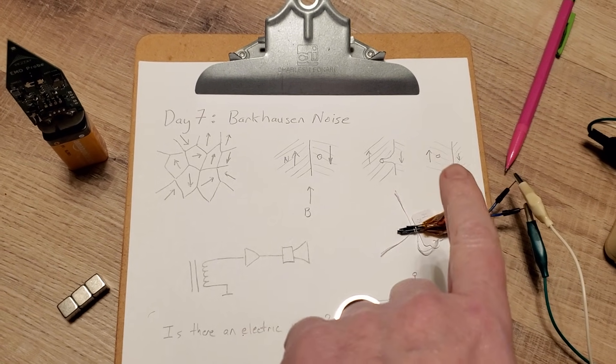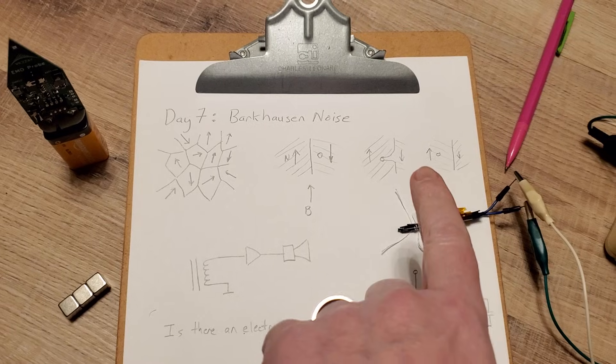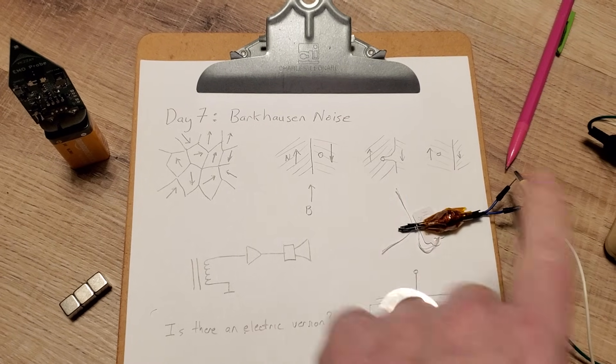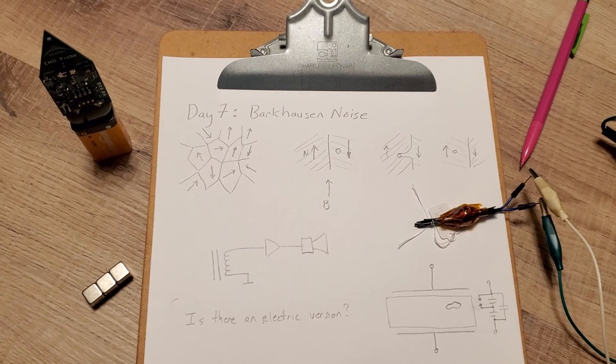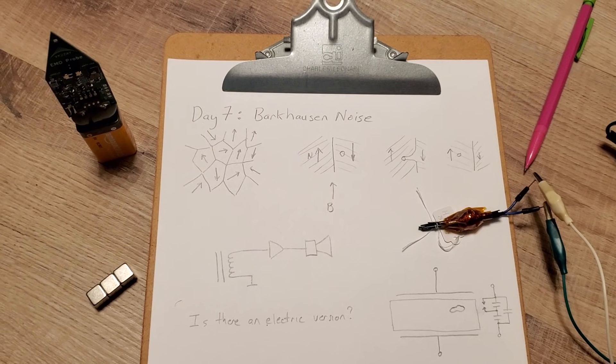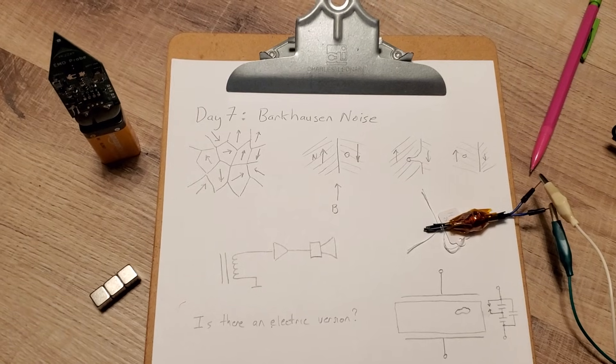Eventually the magnetization will become sufficient to cause the domain wall to progress beyond that pinning defect and there's a rapid change in the external visible magnetic field in the core and outside the core as well.